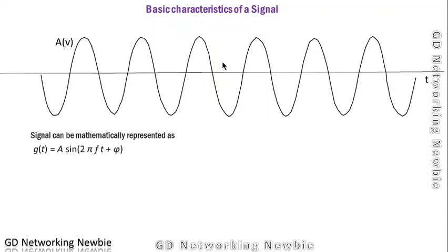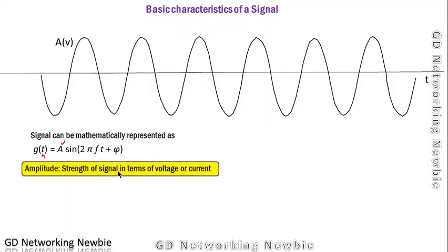Let's see how to represent that signal mathematically. The mathematical representation of this signal is g(t) = A sin(2πf t + φ). This is a function of time. Here, this A is the amplitude. Amplitude is the strength of the signal in terms of voltage or current. This is the strength changing with respect to time.